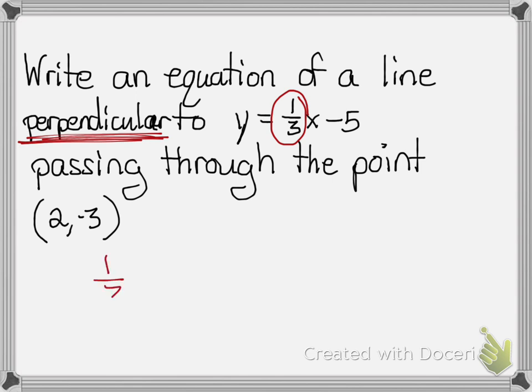So my original slope is 1 third, opposite of that would be negative 1 third, and then when I find the reciprocal or basically flip it, it turns into negative 3 over 1, which is basically just negative 3. So my perpendicular slope I'll be dealing with is negative 3.